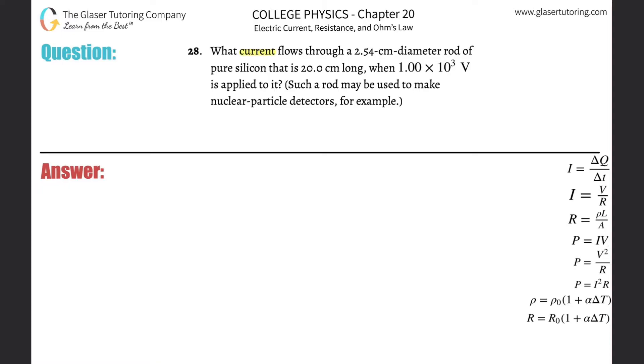Number 28, what current flows through a 2.54 centimeter diameter rod of pure silicon that is 20 centimeters long when 1 times 10 to the 3 volts is applied to it?